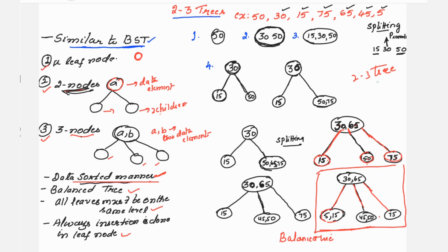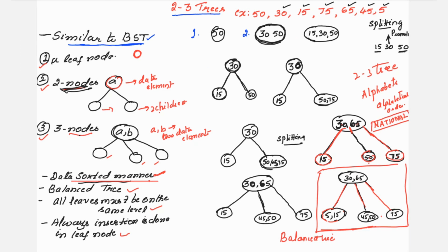You can also construct a two-to-three tree using alphabets instead of numbers. If a word like 'national' is given with its letters N, A, T, I, O, N, A, L, you follow the same rules, arranging alphabets in alphabetical order. Always write the step numbers: step 1, step 2, step 3 (with splitting giving the resulting tree), and so on through step 7. I hope this is helpful — please like, share, and subscribe to my channel. Thank you, bye-bye and take care.